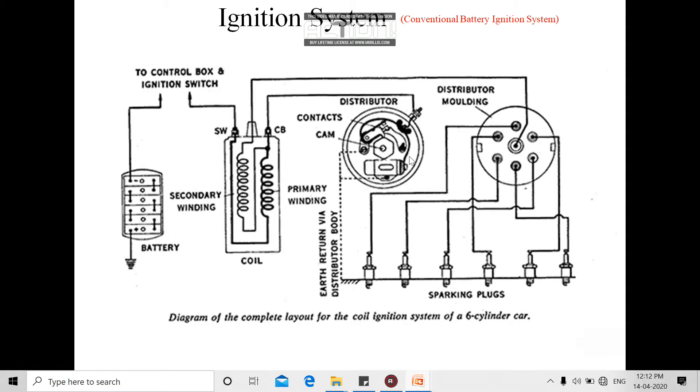One goes to the capacitor and through a dotted line is earthed to the vehicle body. Similarly, the split end of the primary winding is going to the contact breaker, and the contact breaker through a dotted line is again grounded. In that way, this contact breaker is connected in parallel with the capacitor, as shown in the 3D diagram.